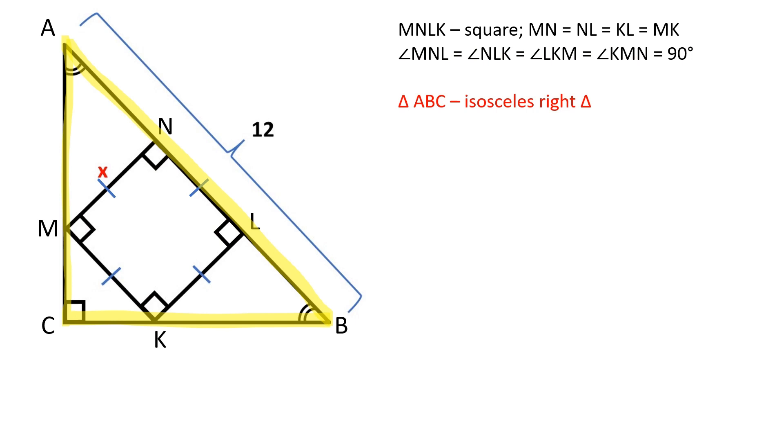Triangle ABC is an isosceles right triangle, angle CAB is equal to angle CBA and equal to 45 degrees. Triangle KLB is an isosceles right triangle,